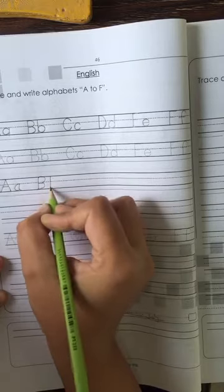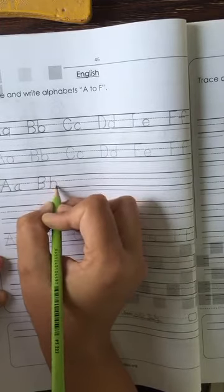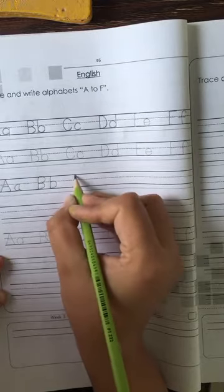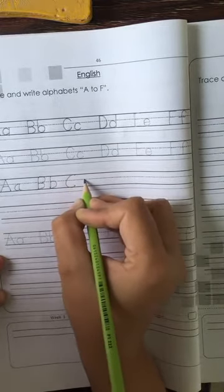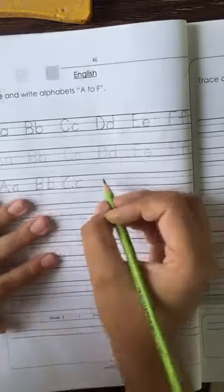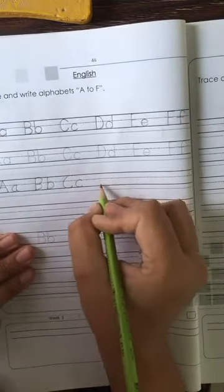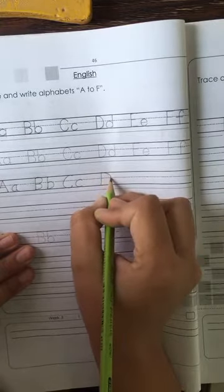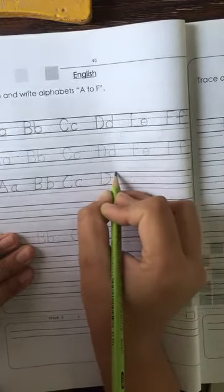Top to the bottom and make same box. Now capital C, two doors. And small c. Then D, straight line and make a curve top to the bottom. And the small d.